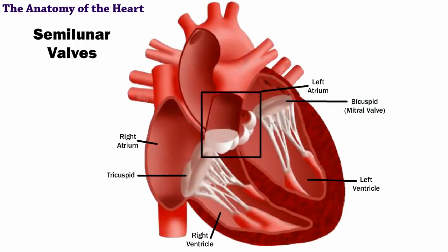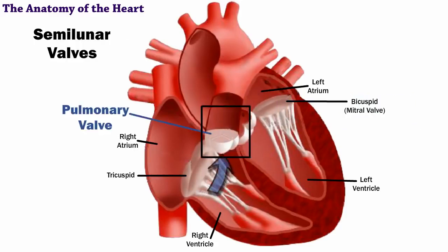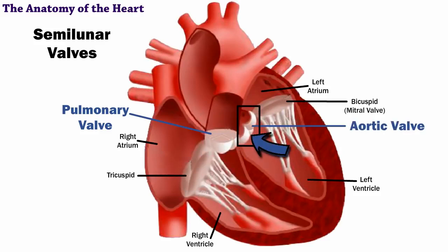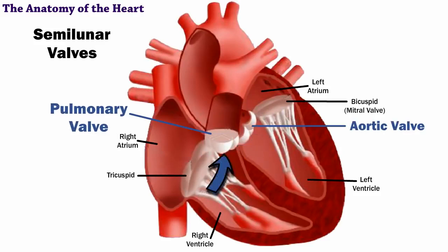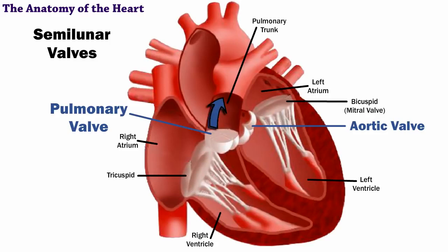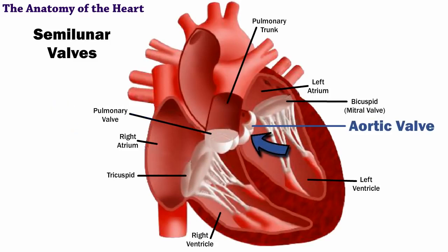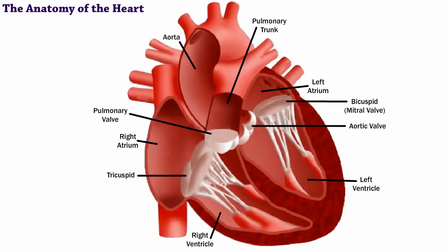There are also two semilunar valves: the pulmonary and the aortic. The pulmonary is between the right ventricle and the pulmonary trunk, and the aortic is between the left ventricle and the aorta.